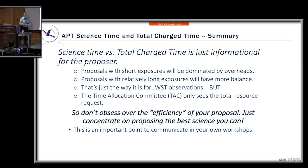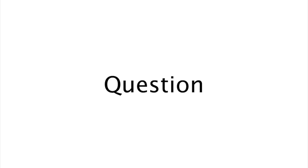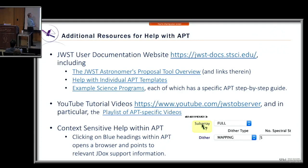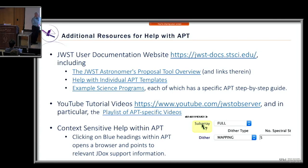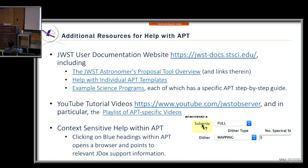JDocs is the place to go for information. There is a whole set of articles on APT starting with a nice overview article with links to all subsections, articles on each APT template with step-by-step guides, and example science programs each with an APT step-by-step guide. There are separate video playlists for APT-specific and ETC-specific videos. Within APT or ETC, context-sensitive help is available — hovering over headers reveals a question mark, and clicking it opens the relevant JDocs article in a separate browser window.